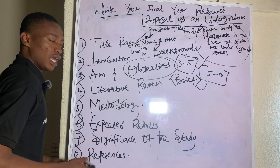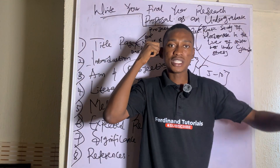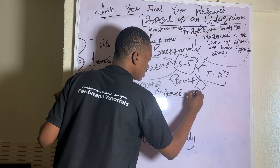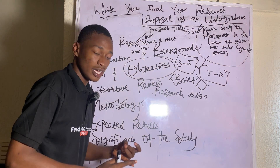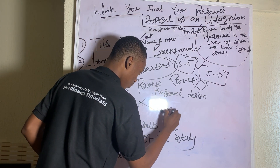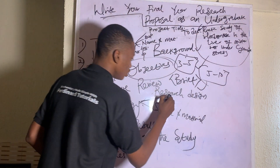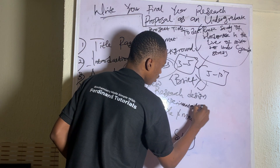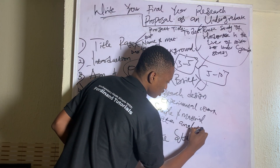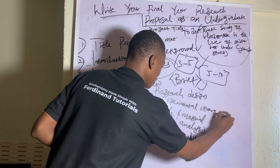Now let's look at Methodology — this is the heart of your proposal, because one reason you submit a proposal is so others can replicate your work. The methodology must be accurate. It should include: Research Design (is your work experimental, descriptive, etc.); Samples and Materials (what are you going to be using); Experimental Work (what you do in the lab); and Data Analysis (what tools you'll use to analyze your data).